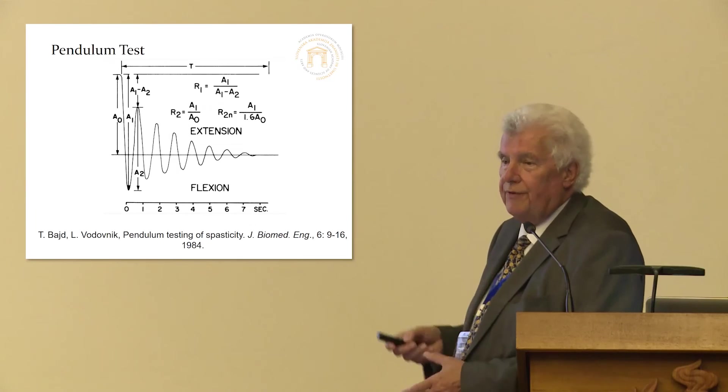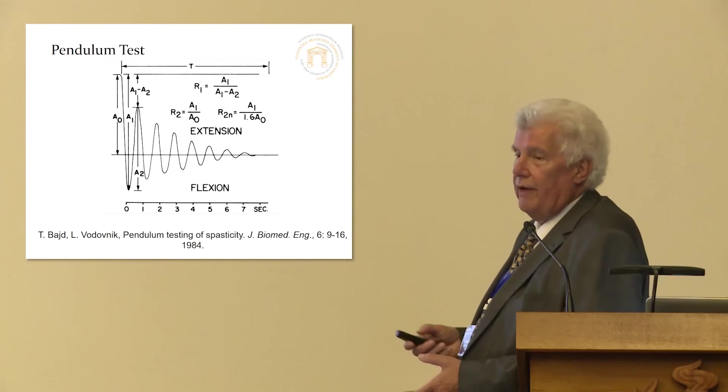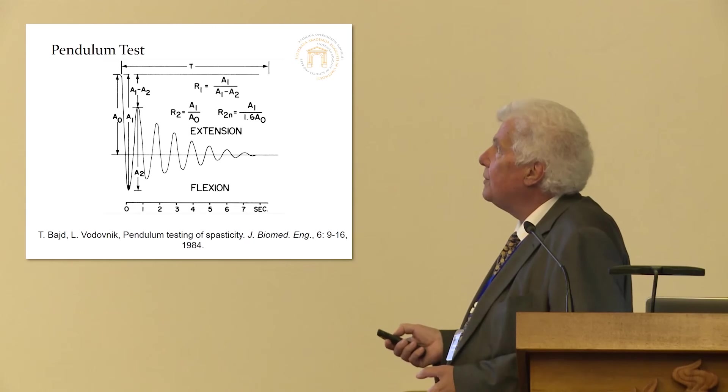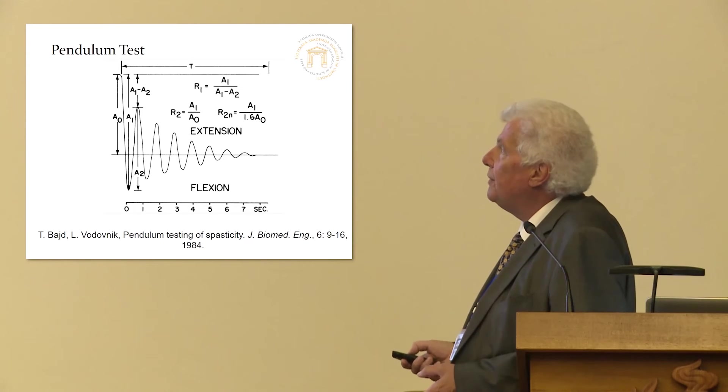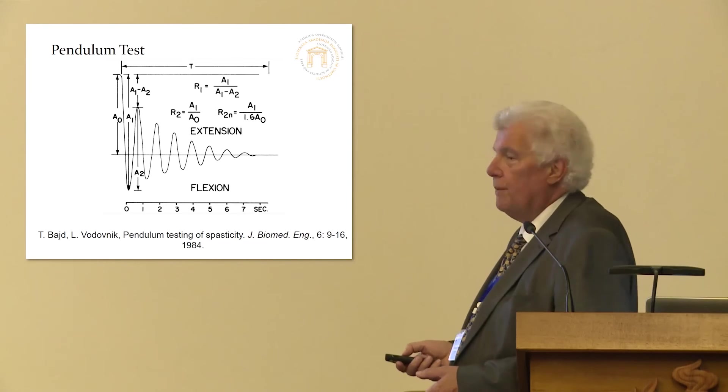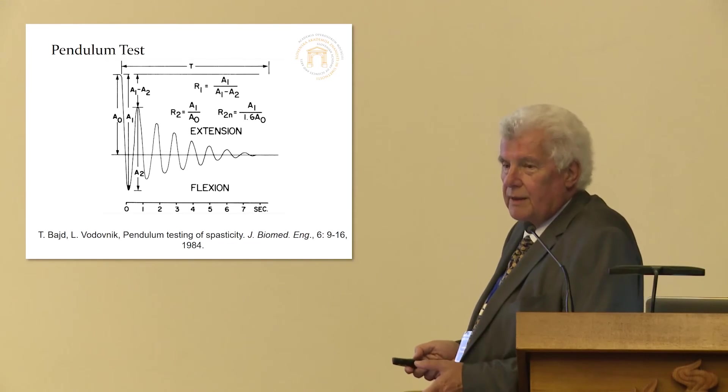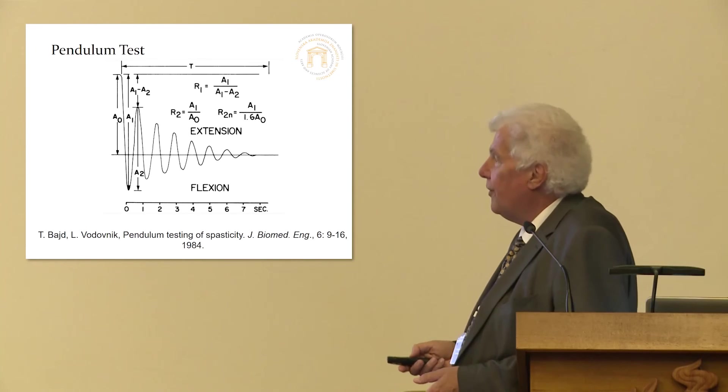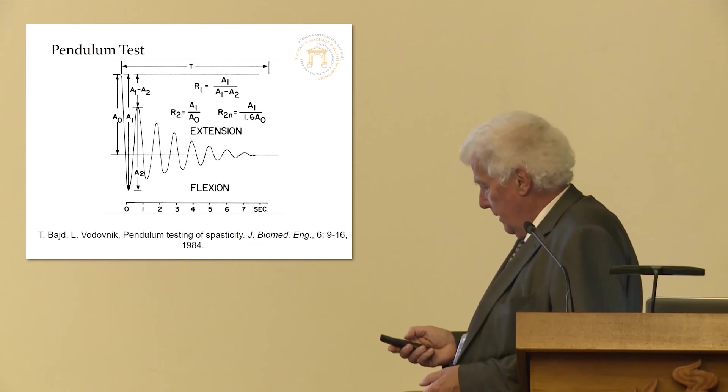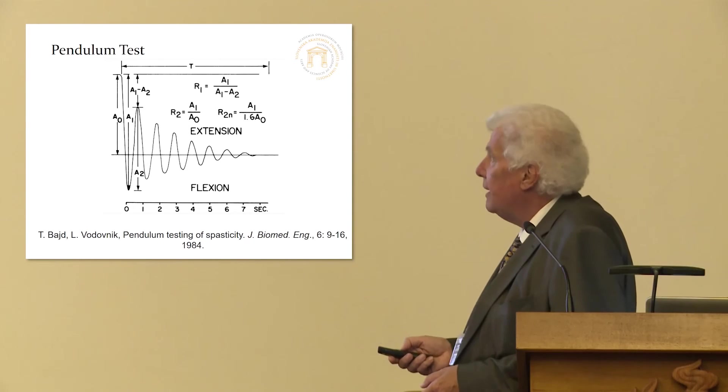And we defined also different indices, how to evaluate spasticity. The most important was this relaxation index, which is the ratio of the first amplitude of the swing and the neutral position. And it is interesting enough that this was one of the papers that was the best cited from my papers and papers of Professor Vodovnik. And this was quite old studies but were recently continued by Dejan.